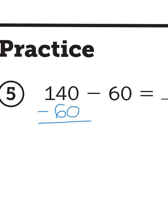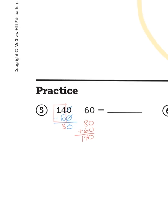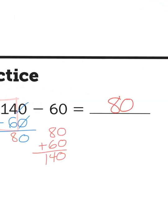I'm going to subtract 140 minus 60. I always start from the right when subtracting. 0 minus 0 is 0. 4 minus 6 doesn't work because if I have 4, I can't take 6 away, so I need to look at the hundreds place value and borrow. If I remember that 140 is 14 tens and 60 is 6 tens, I'm just subtracting 14 minus 6. You can count back from 14 down 6 to get your answer — that leaves you with 8. Because 8 plus 6 gives me 14, so 8 tens plus 6 tens gives me 14 tens. Just like riding a bicycle, it all comes back with a little practice. So 80 is my answer, my difference.